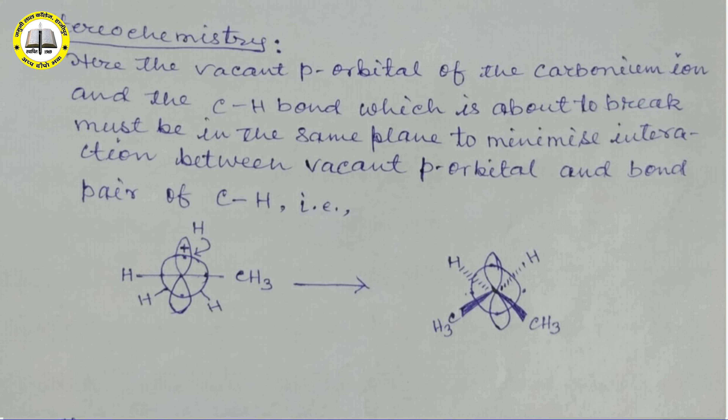Now we consider the stereochemistry. Here the vacant p-orbital of the carbonium ion and the C–H bond which is about to break must be in the same plane to minimize interaction between the vacant p-orbital and the bond pair of C–H. This is the figure and this is the note, and so this is the stereochemistry of E1 reaction.